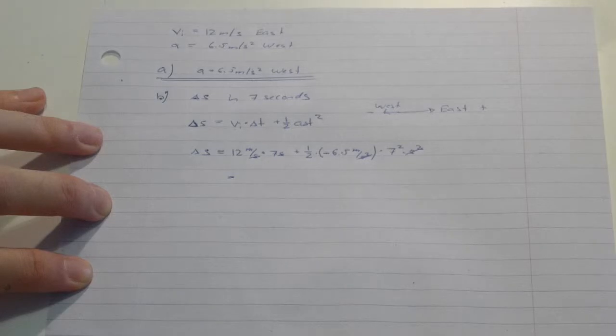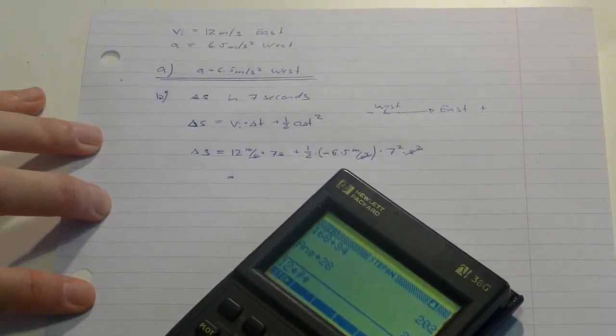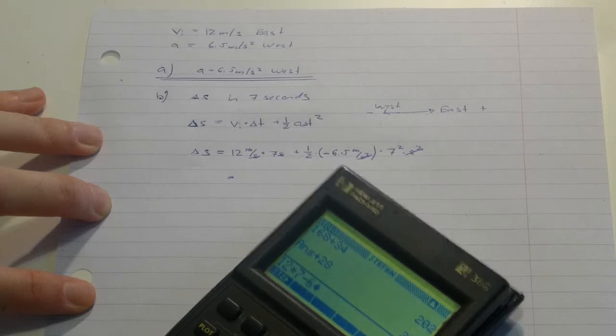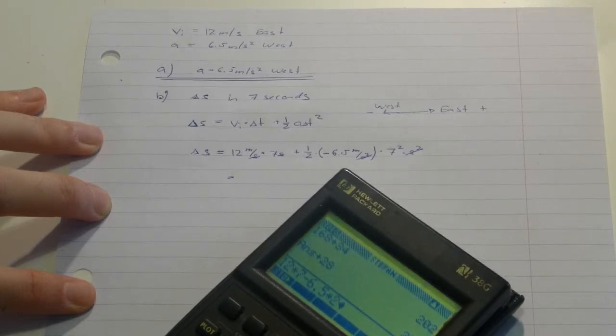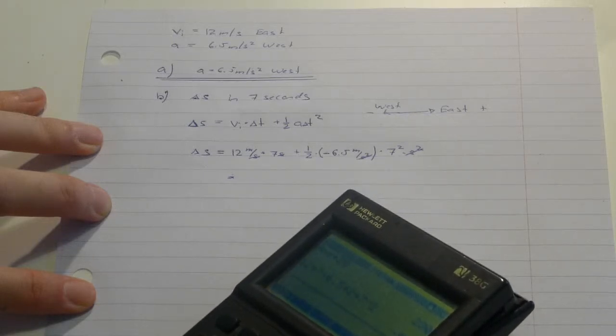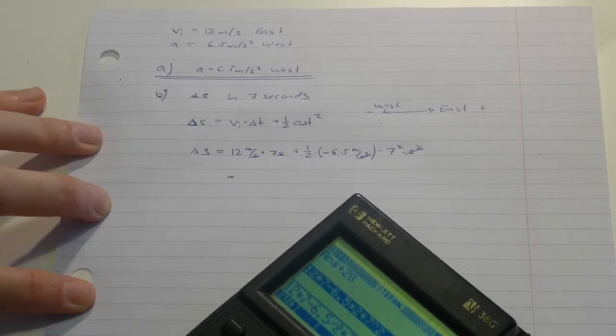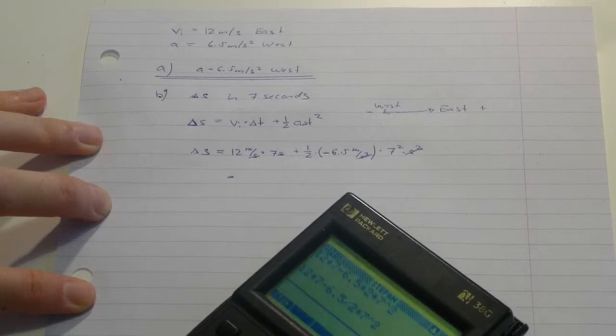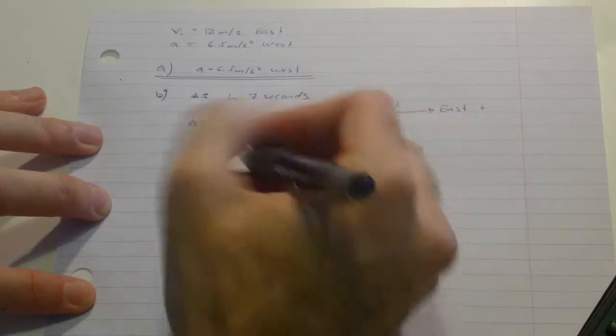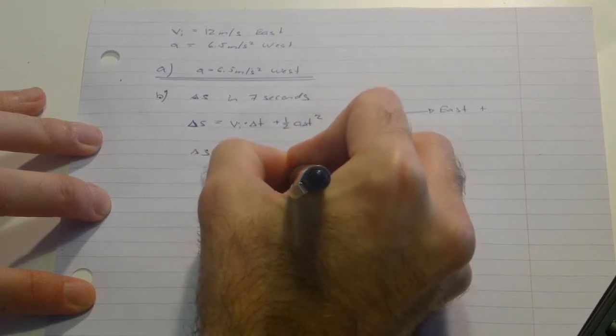Therefore, my formula looks right and I can type it in. 12 times 7 minus 6.5 divided by 2 times 7 squared. So let's divide it by 2. Minus 75.25 meters.